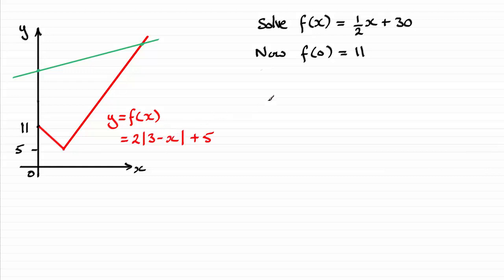that would give us y equals 2 times all of 3 minus x plus 5. And if we simplify this, you can see we get 2 threes of 6 plus the 5 is 11 and we get minus 2x. So minus 2x plus 11, which is clearly a straight line but with a negative gradient passing through the y axis at 11. And you can see that that must be this branch here.